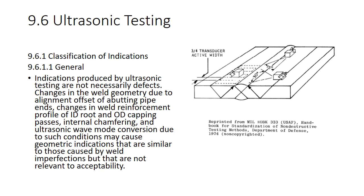Changes in weld geometry due to alignment offset of abutting pipe ends, changes in weld reinforcement profile of ID root or OD capping passes, internal chamfering, and ultrasonic wave mode conversion due to such conditions may cause geometric indications that are similar to those caused by welded imperfections, but are not relevant to acceptability. So it's telling you that sound waves bouncing around inside the piece of metal and the weld geometry and alignment of the pipe can give you conditions that could cause something to show up that isn't necessarily an imperfection and isn't necessarily relevant to acceptability. So you've got to be careful with this one.